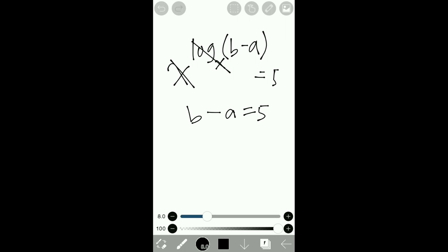Ataupun kalau soalan tanya, make A as a subject. Okay, A as a subject, pindah ke sana. A ini pindah ke sana, so A equals to B minus 5.